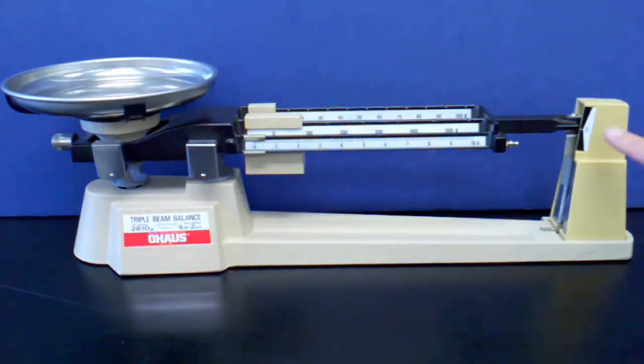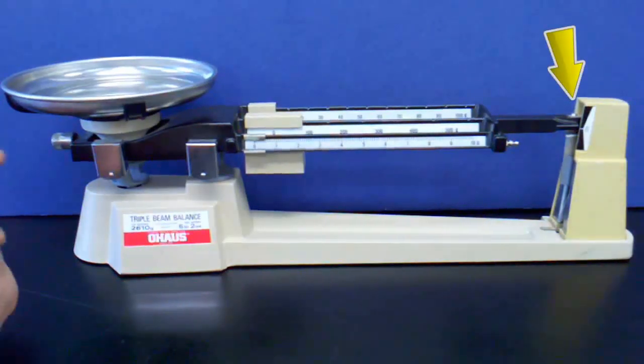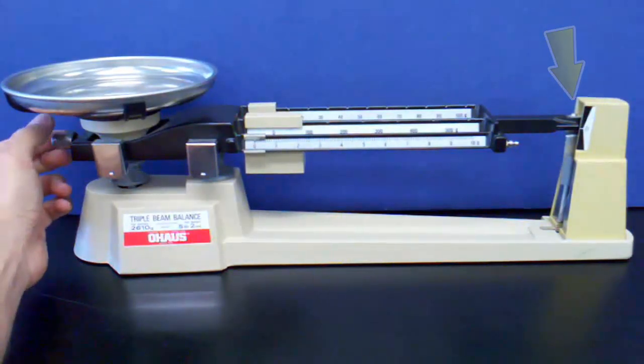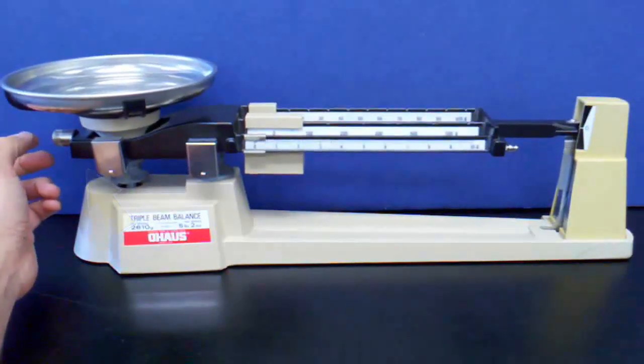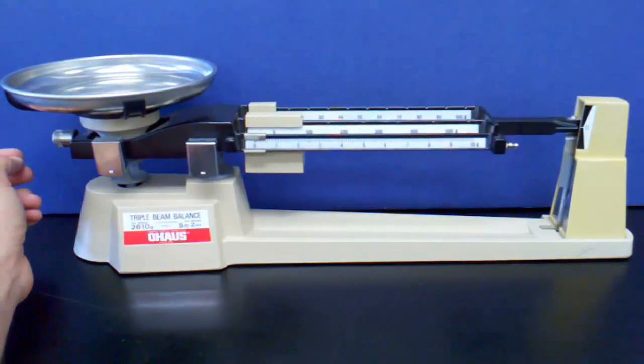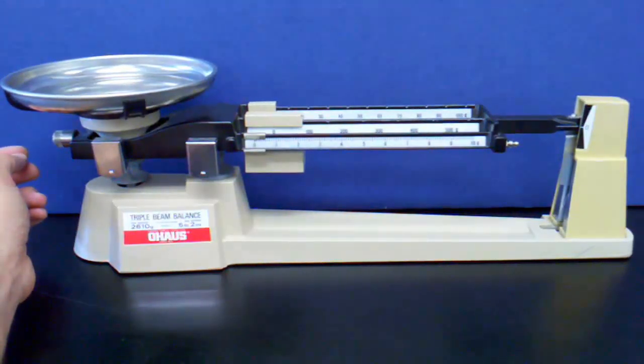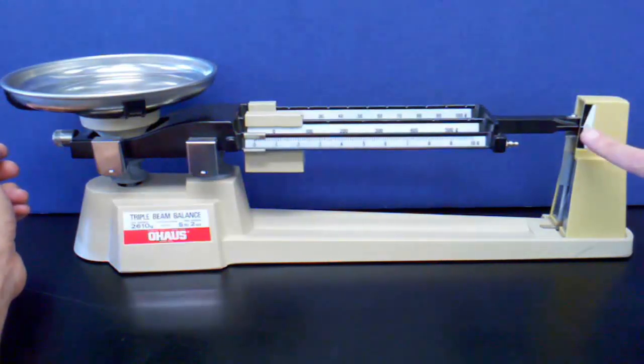The first thing to do is to ensure that the balance is zeroed. Notice that the pointer and the zero mark are not aligned. Using the adjustment knob under the pan, I screw the adjustment knob in or out until the pointer aligns with the zero mark at the other end of the balance.